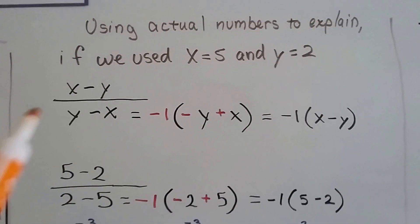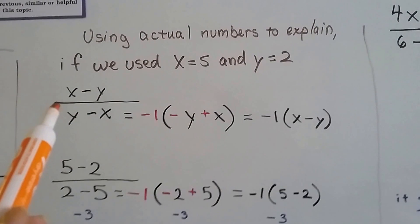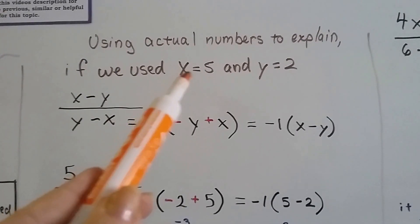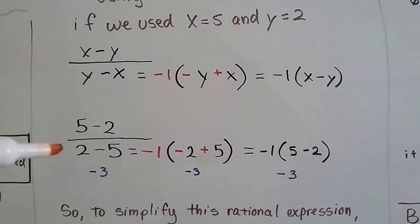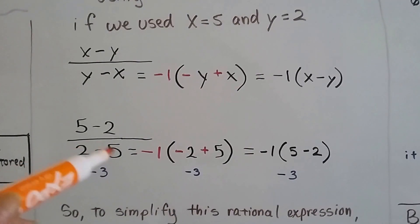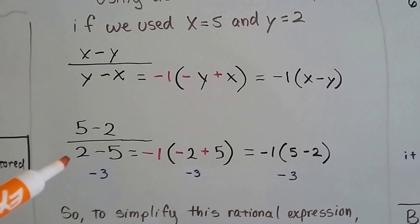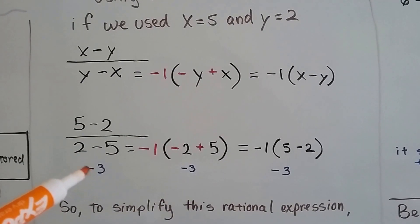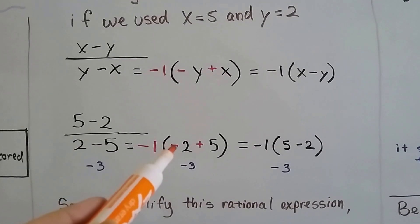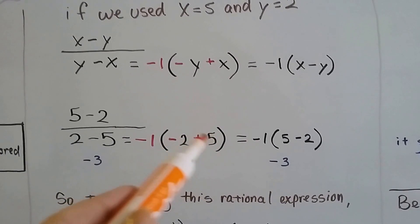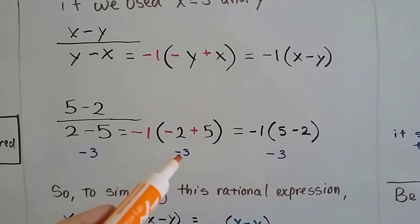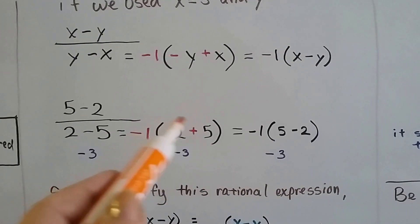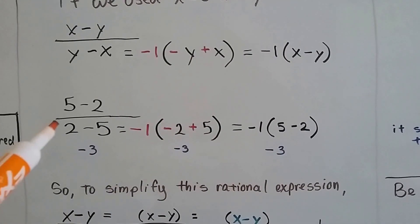We're going to use actual numbers to explain this. With x minus y over y minus x — let's say x was 5 and y was 2. Now we've got 5 minus 2 over 2 minus 5. Just pay attention to this denominator for now. If we have 2 minus 5, we know that's a negative 3. Well, 2 minus 5 can also be negative 2 plus 5. Negative 2 plus 5 is a positive 3. If we multiply that by negative 1, we go back to our negative 3. So this negative 1 times negative 2 plus 5 is the same thing as 2 minus 5.